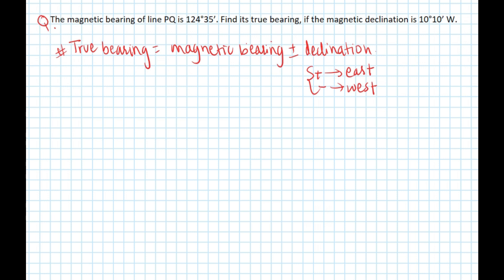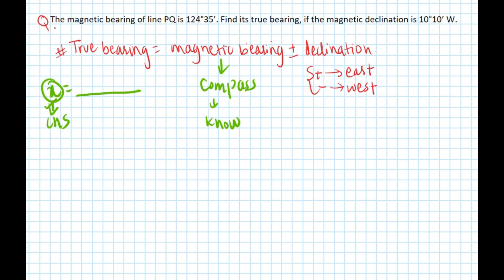Our usual convention is to write everything we don't know on the left-hand side — for example, x equals something, where x is unknown. Similarly, in this formula, magnetic bearing is given by the compass so we know that, but what we don't know is the true bearing. So we write true bearing on the left-hand side, and the formula becomes: true bearing equals magnetic bearing plus or minus declination.